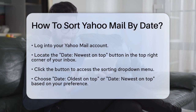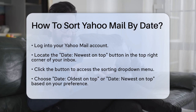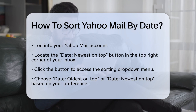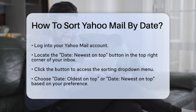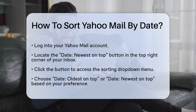First, log into your Yahoo Mail account. Once you're in your inbox, look for the Date Newest on Top button located in the top right corner. This button is your key to sorting emails by date.